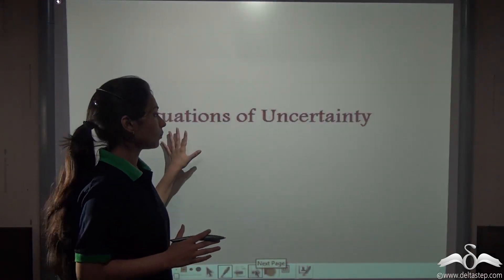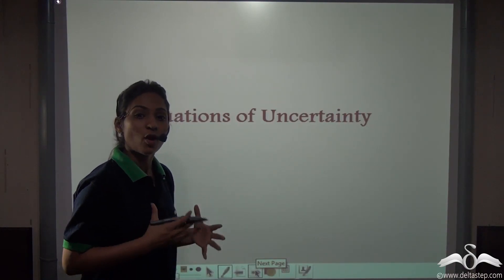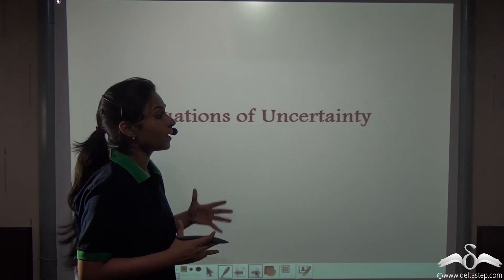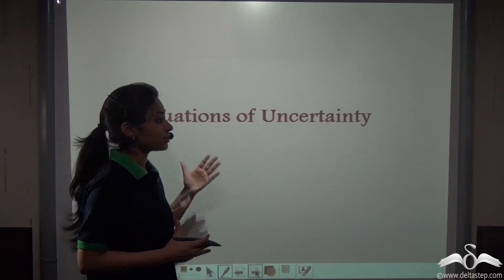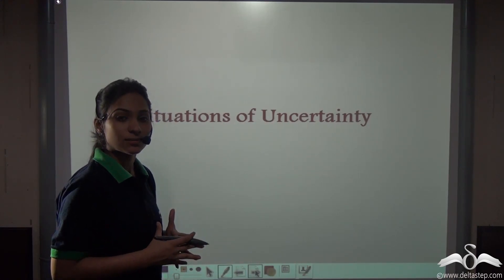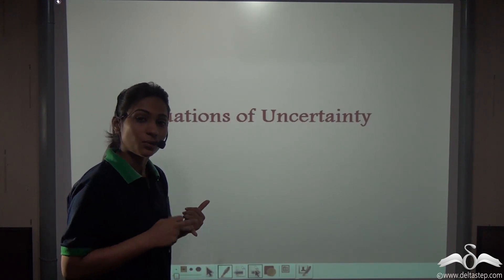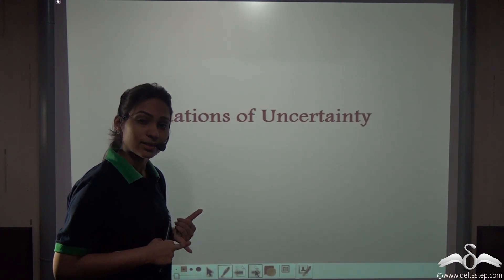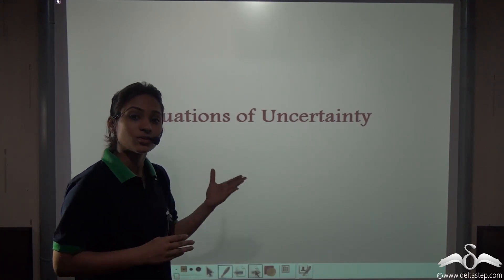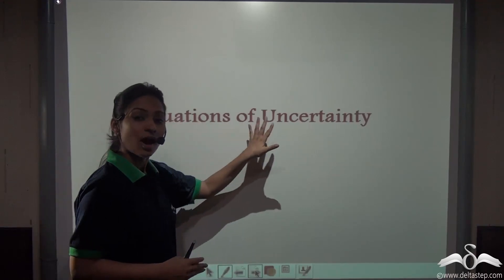Situations of uncertainty are those which may or may not happen and their results are not sure to us. Now, what about situations that are not uncertain — that is, certain ones? For example, the rising of the sun. You know that the sun will rise, and also in the east. So that is a certain event. It has to take place and does not come under the situation of uncertainty.